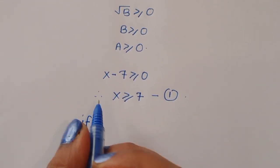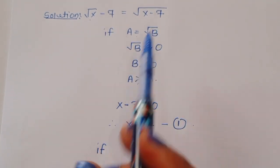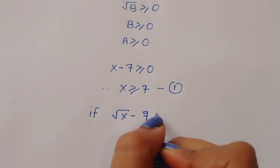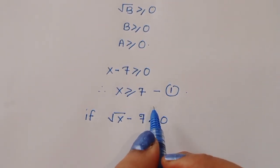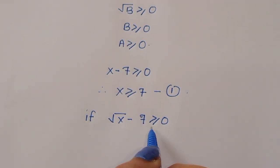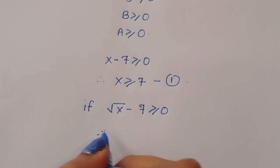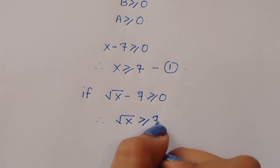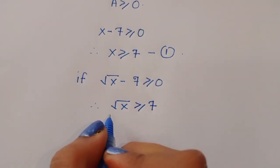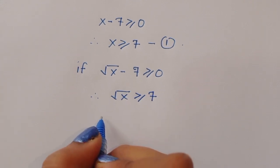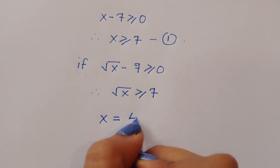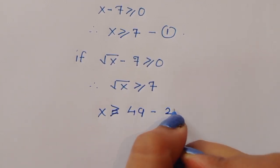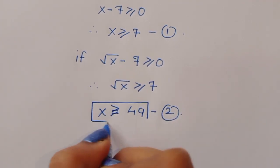Now, since square root of x minus 7 is greater than or equal to 0, and using the condition that a is greater than or equal to 0, we can write square root of x is greater than or equal to 7. Squaring both sides, x is greater than or equal to 49. This is equation number 2.